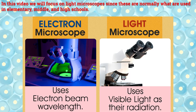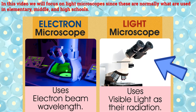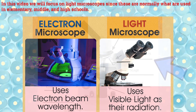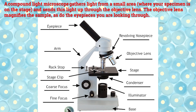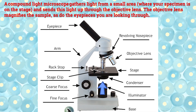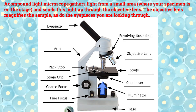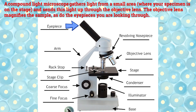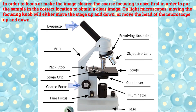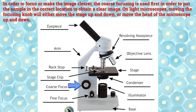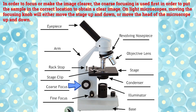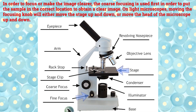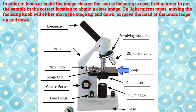In this video we will focus on light microscopes, since these are normally what are used in elementary, middle, and high schools. A compound light microscope gathers light from a small area where your specimen is on the stage and sends this light up through the objective lens. The objective lens magnifies the sample, as do the eyepieces you are looking through. To focus or make the image clearer, the coarse focusing knob is used first to put the sample in the correct location. On light microscopes, moving the focusing knob will either move the stage up and down or move the head of the microscope up and down.